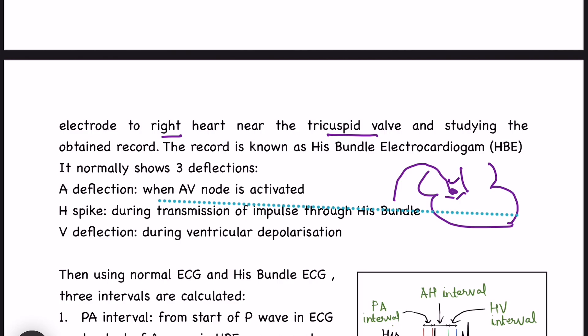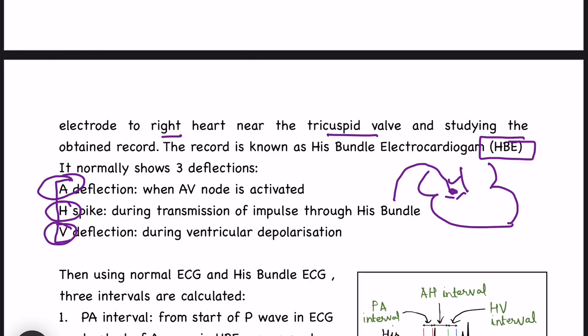The electrical activity is recorded by this electrode, and this electrical activity is known as the His bundle electrocardiogram. This His bundle electrocardiogram shows three deflections: A, H, and V. A is for AV node, H is for His bundle, and V is for ventricular depolarization. The A deflection occurs when there is AV node activation, the H spike occurs during transmission of impulse through His bundle, and the V deflection occurs during ventricular depolarization.